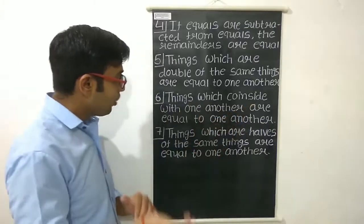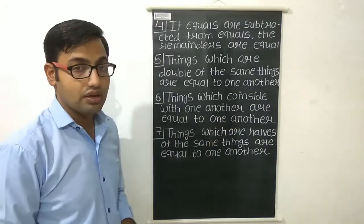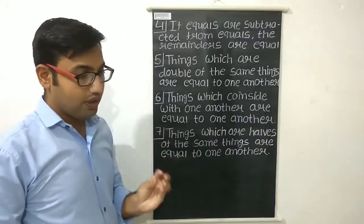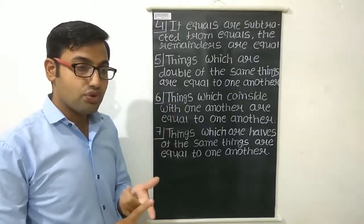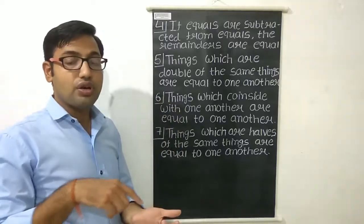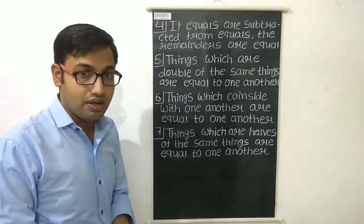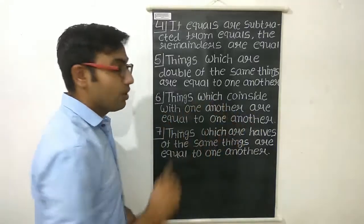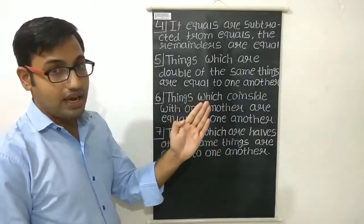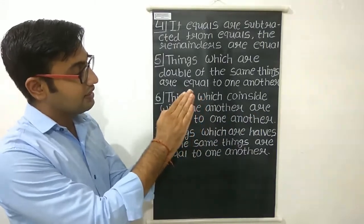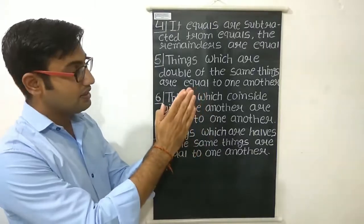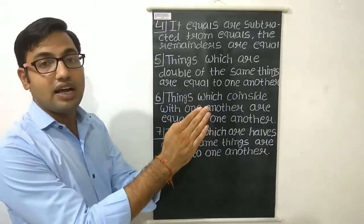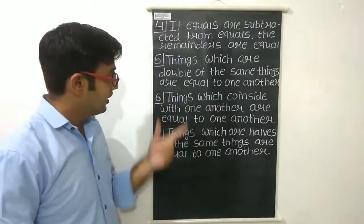The sixth axiom is: things which coincide with one another are equal to one another. Coincide means to cover the whole thing completely. Like if we put one rupee coin on top of another one rupee coin and the first coin is totally covered, both coins are equal. Similarly, if I cover one hand with the other hand, you cannot see the hand beneath — both hands coincide, so both are equal.